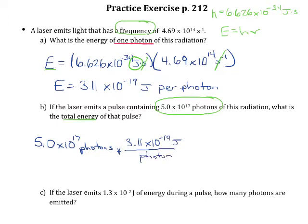So my units of photons are going to cancel, and I'm going to be left with units of joules. Again, I'm going to round to two significant figures because I only have two right here,